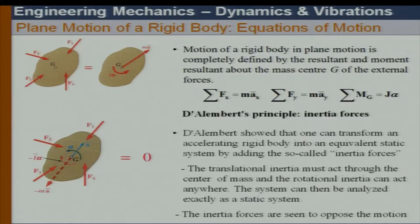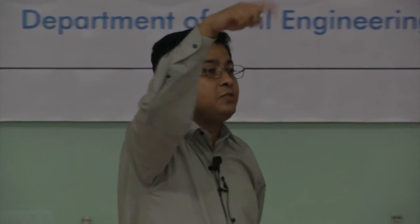J is the mass moment of inertia about the mass center — you usually see it written as I. So we refer to it as J here. That is a general description of the problem.